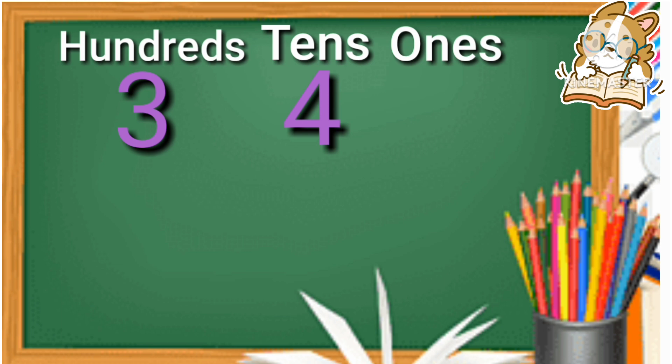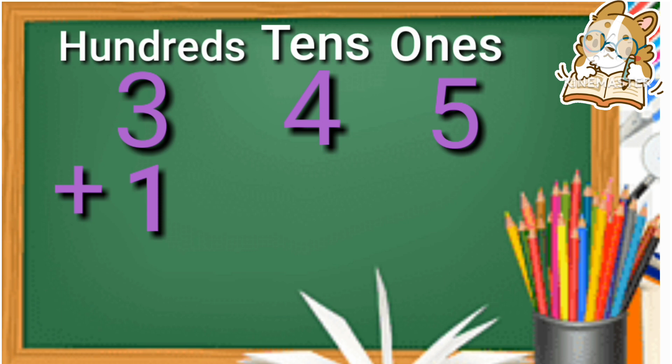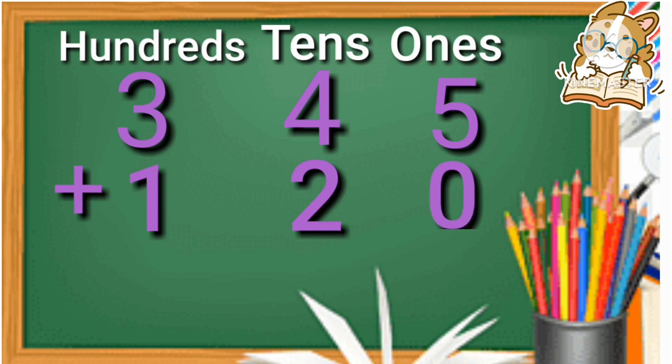We want to add three hundred forty-five plus three hundred forty-five plus one hundred twenty plus one hundred twenty.